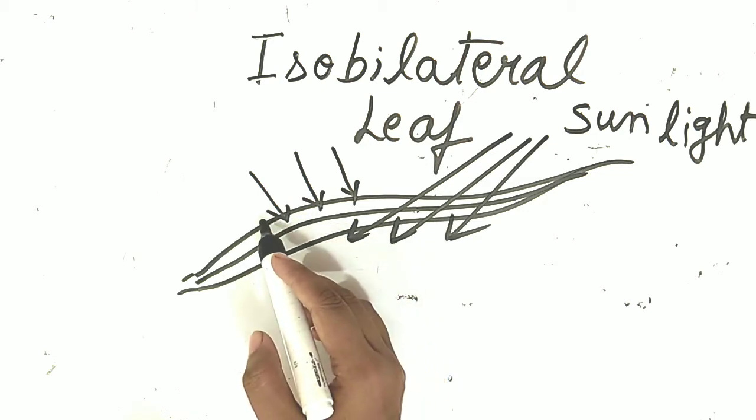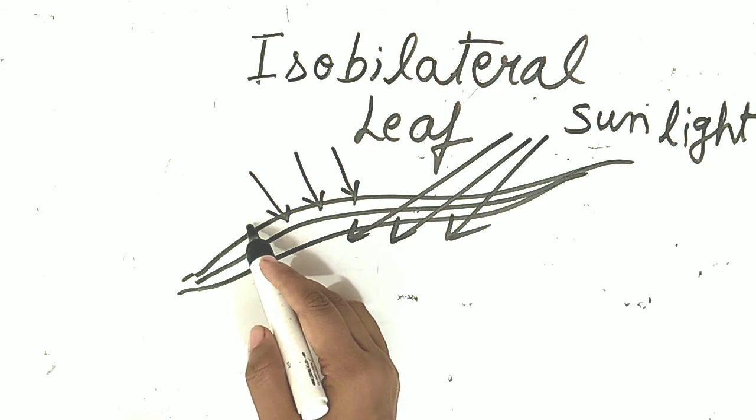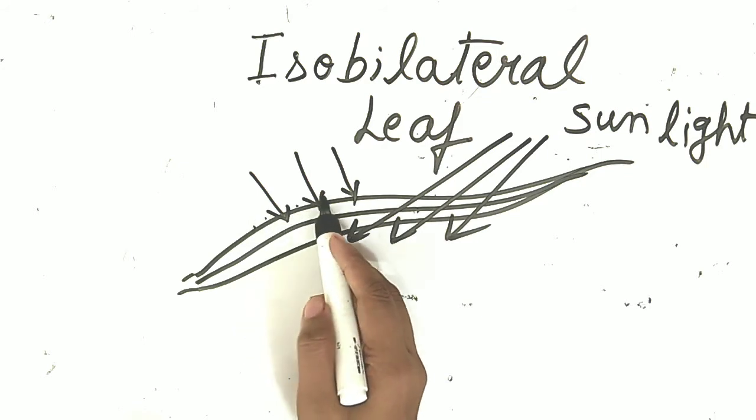इन में एक specific character होता है — upper epidermis में buliform cells present होती है.